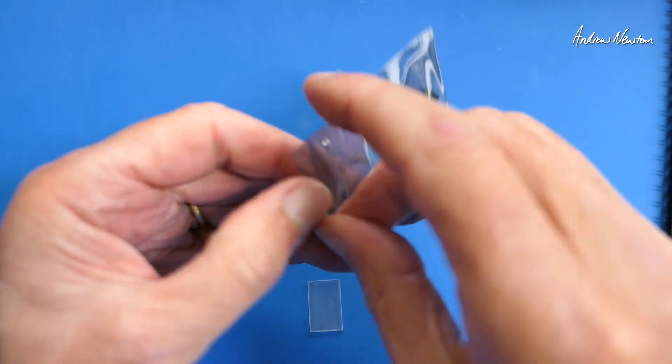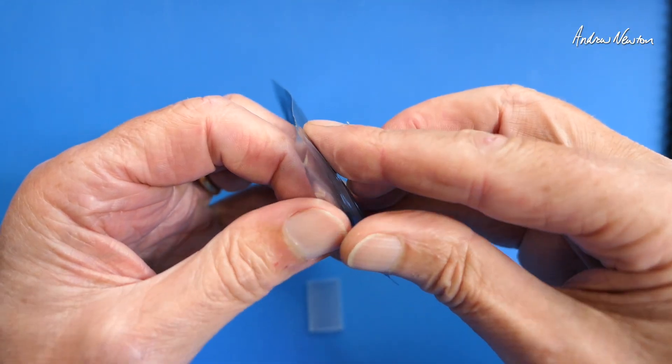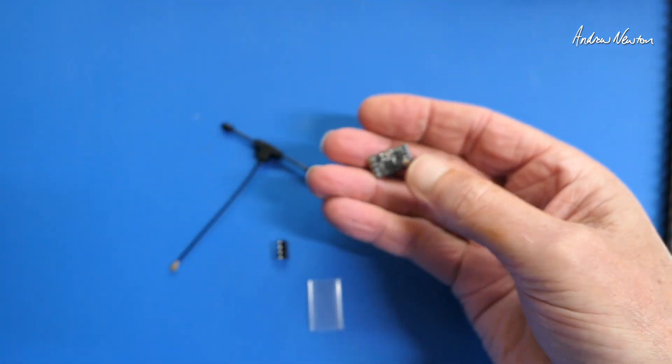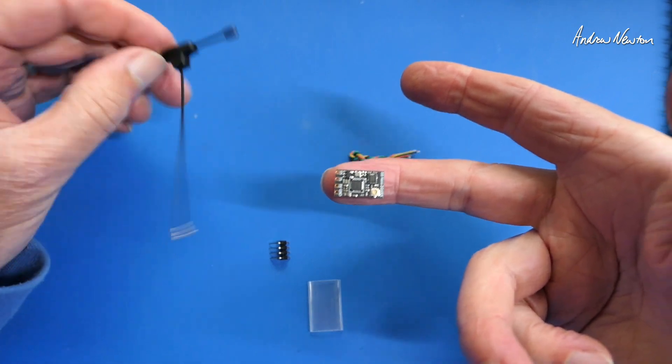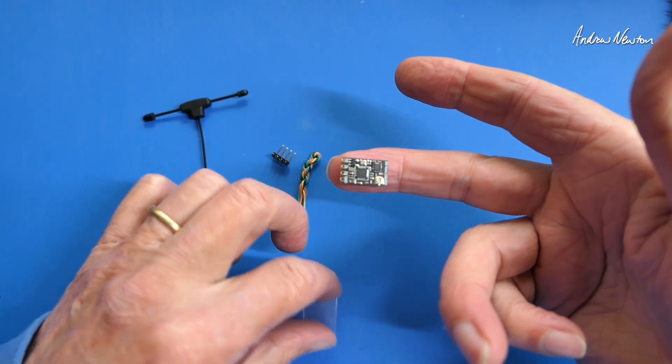So let's find this little fella in here, they're absolutely tiny. Has an impressive 100mW of telemetry power, look at the size of that, that is just ridiculous. Single T antenna, comes with cable, pins and heat shrink.